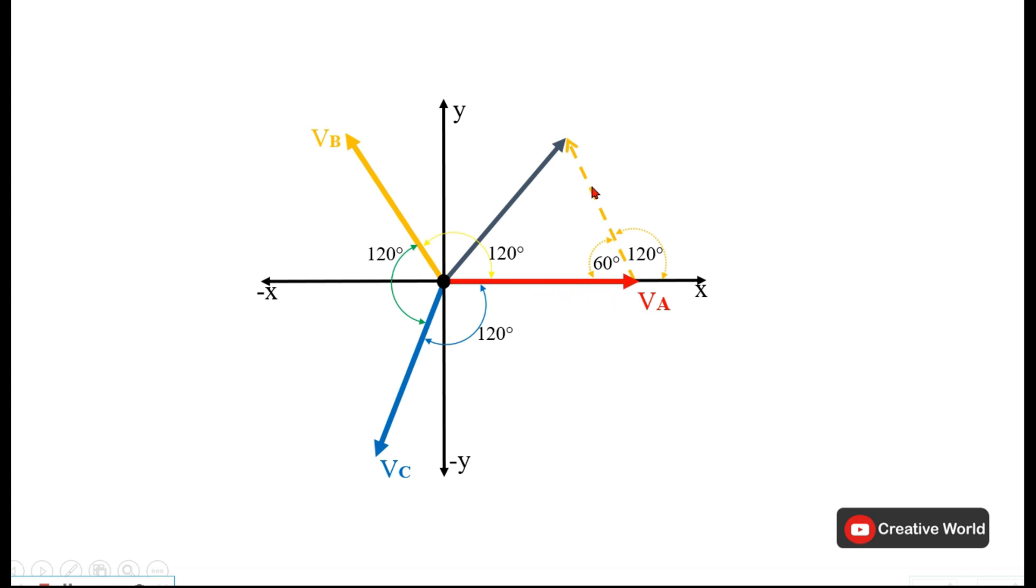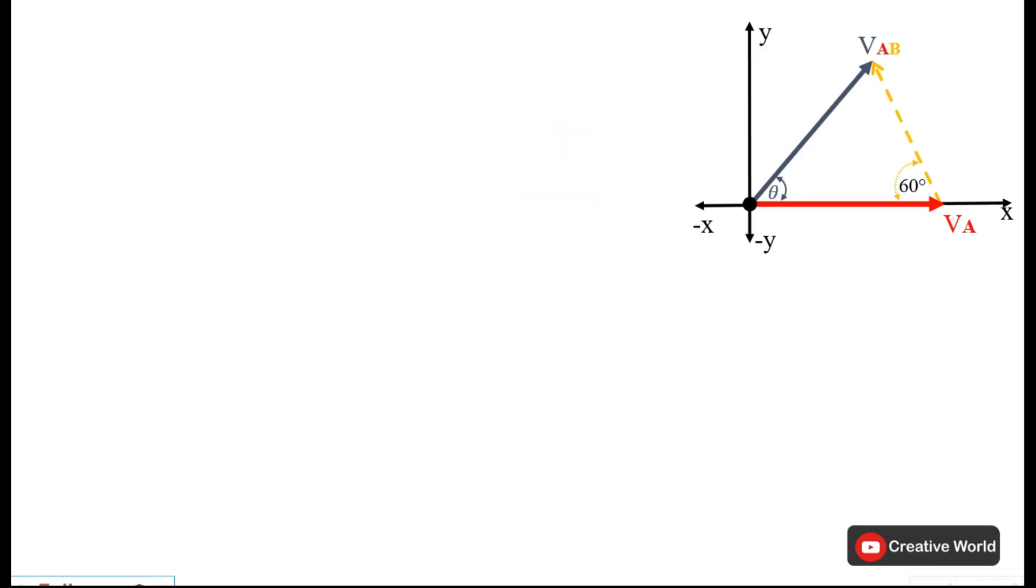Here I have taken only the section which we are going to solve. VA is here, VB is here, and we need to find out VAB, also the angle of VAB.